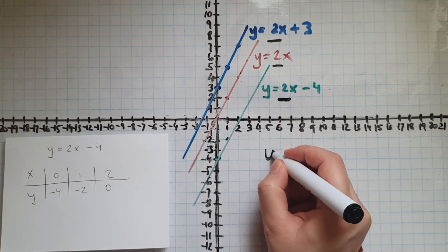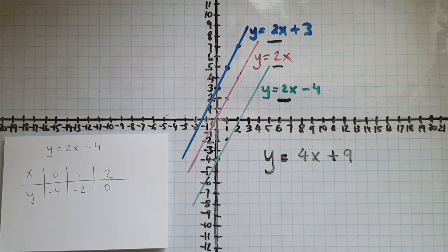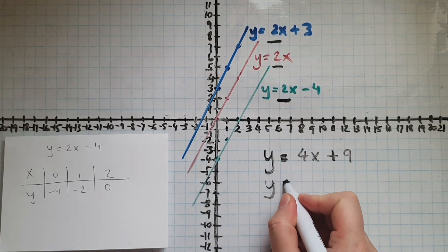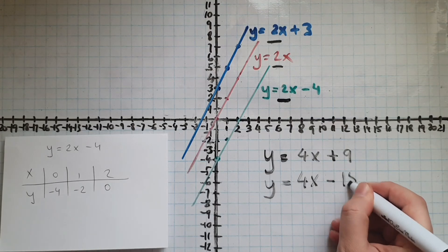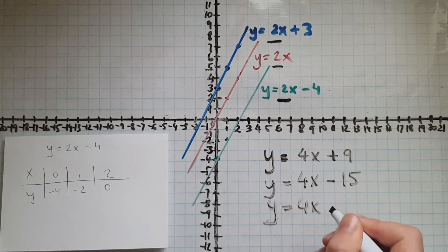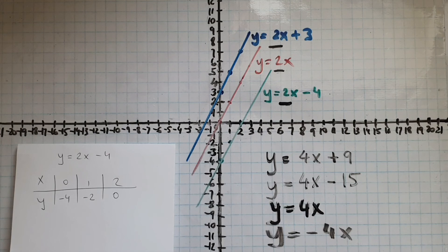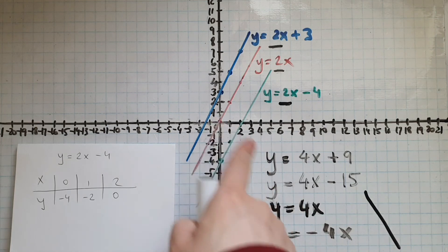So if I look at y equals 4x plus 9 and I tried to find a line that is parallel to this, I can write many different options: y equals 4x minus 15, minus 26, minus 1, or just y equals 4x, or y equals 4x plus 11. What about y equals negative 4x? No, it's not — because it will have a downward slope, so that means it's not parallel to these.